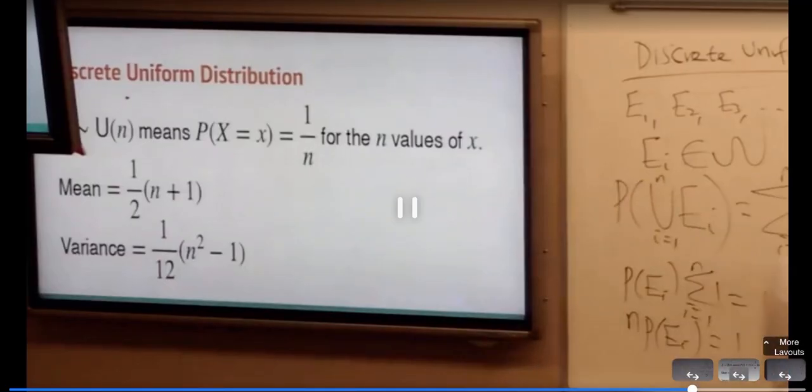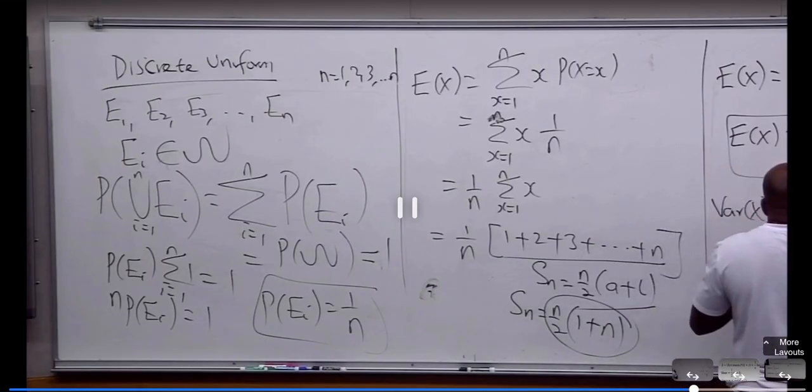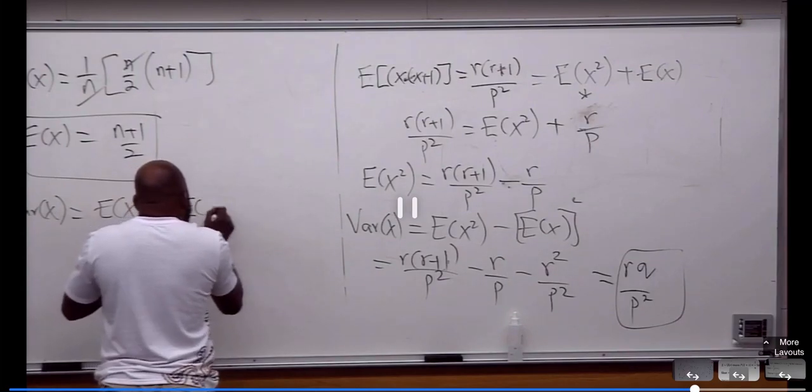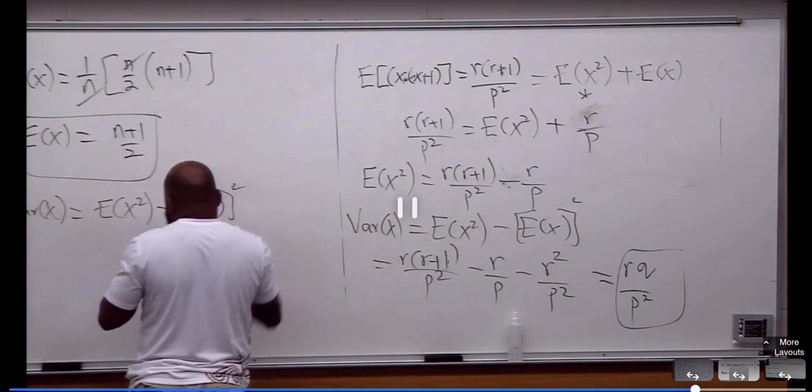Which is this guy. Now, let's quickly rewrite the variance. The variance of S is expected value of S squared minus this guy.